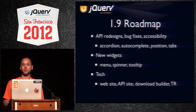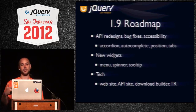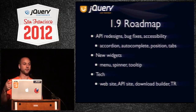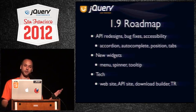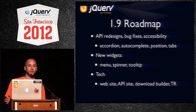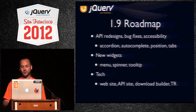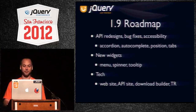We also have menu, spinner, and tooltip. Spinner is like an input type equals number — you've got a text field that you can enter a number in, with up and down buttons that you can spin through the number, and you can use the arrow keys or your mouse wheel. We're also going to land all the infrastructure we had planned: the new website, the new API site, the new download builder, and the new theme roller. So 1.9 is still pretty big, and it is actually coming.